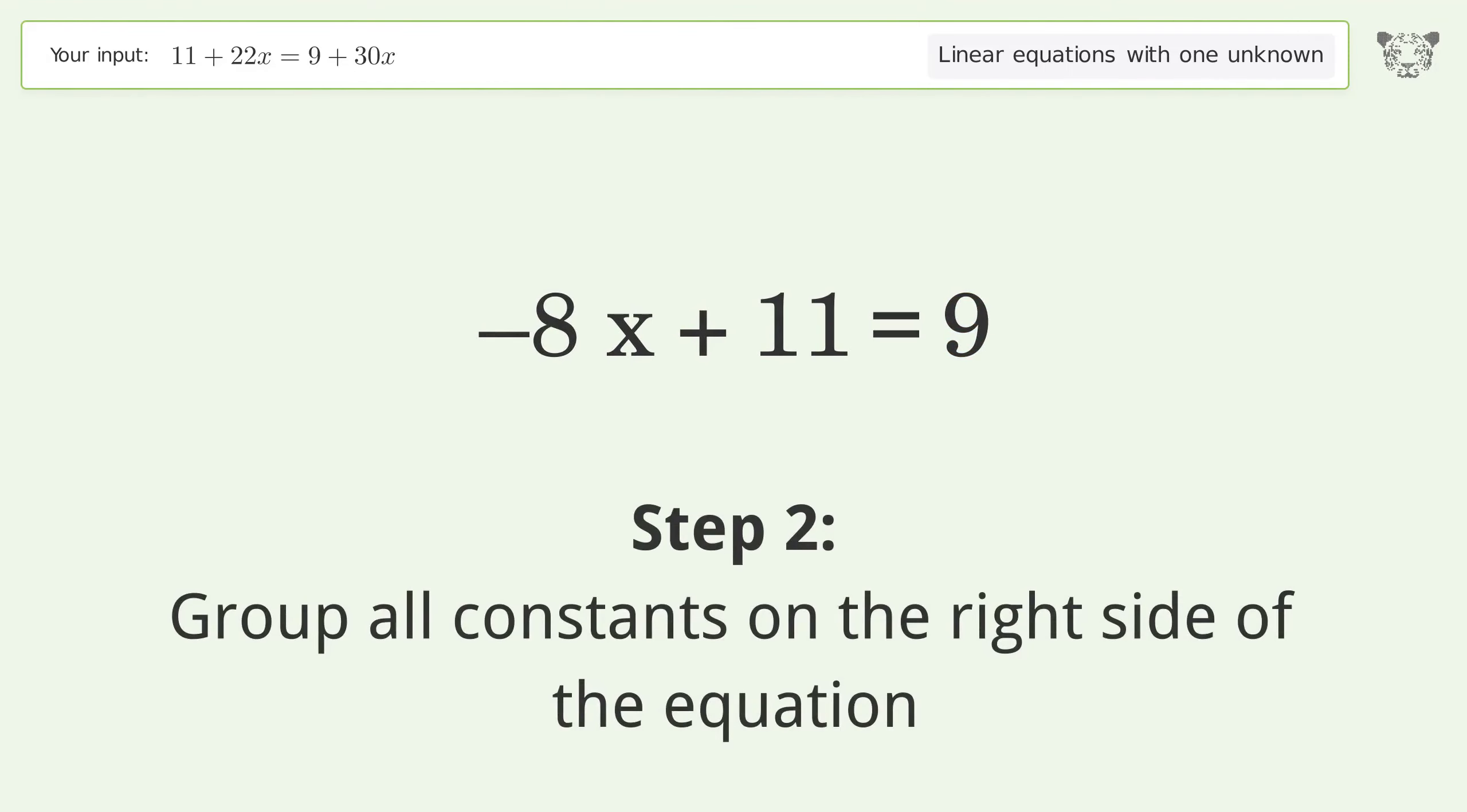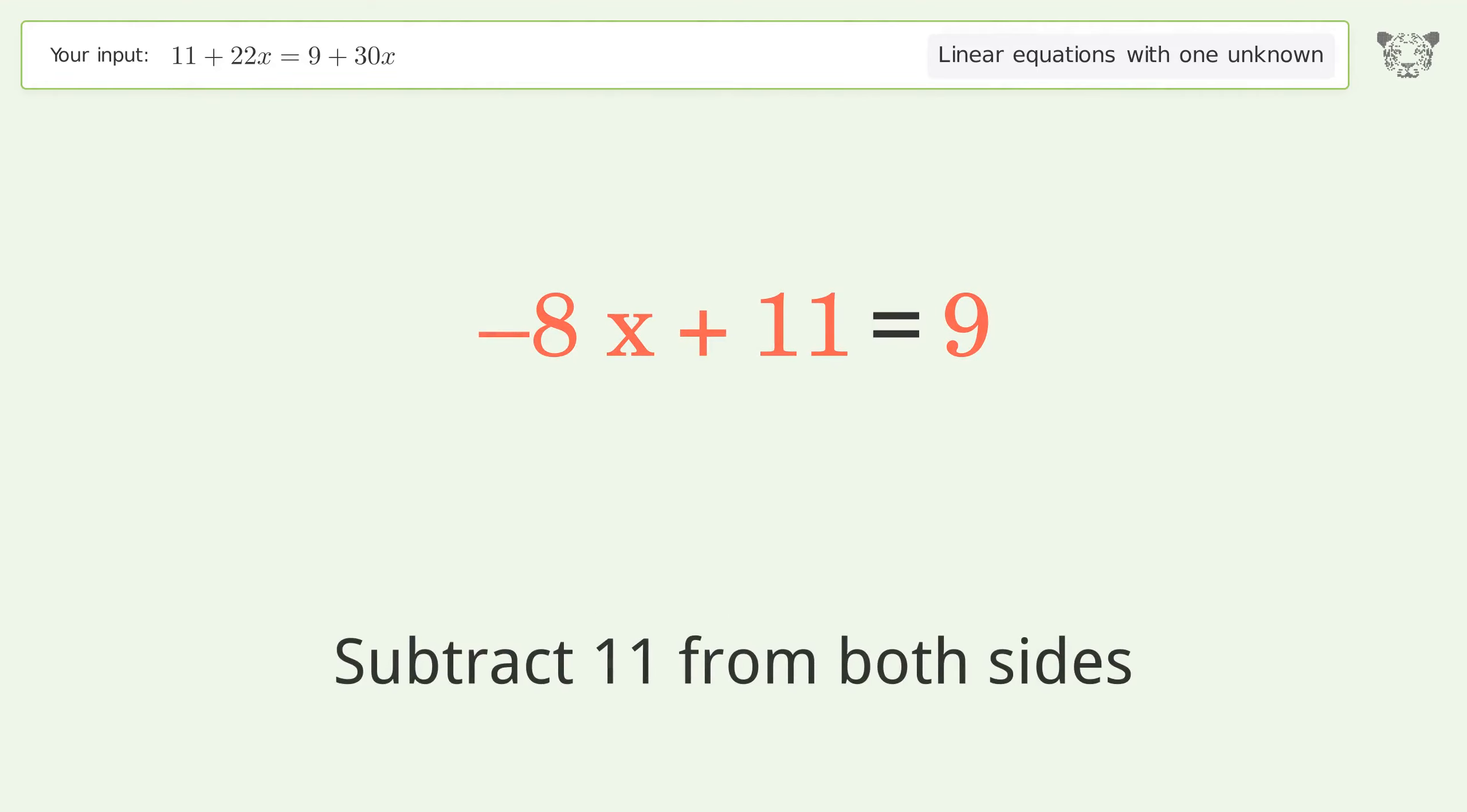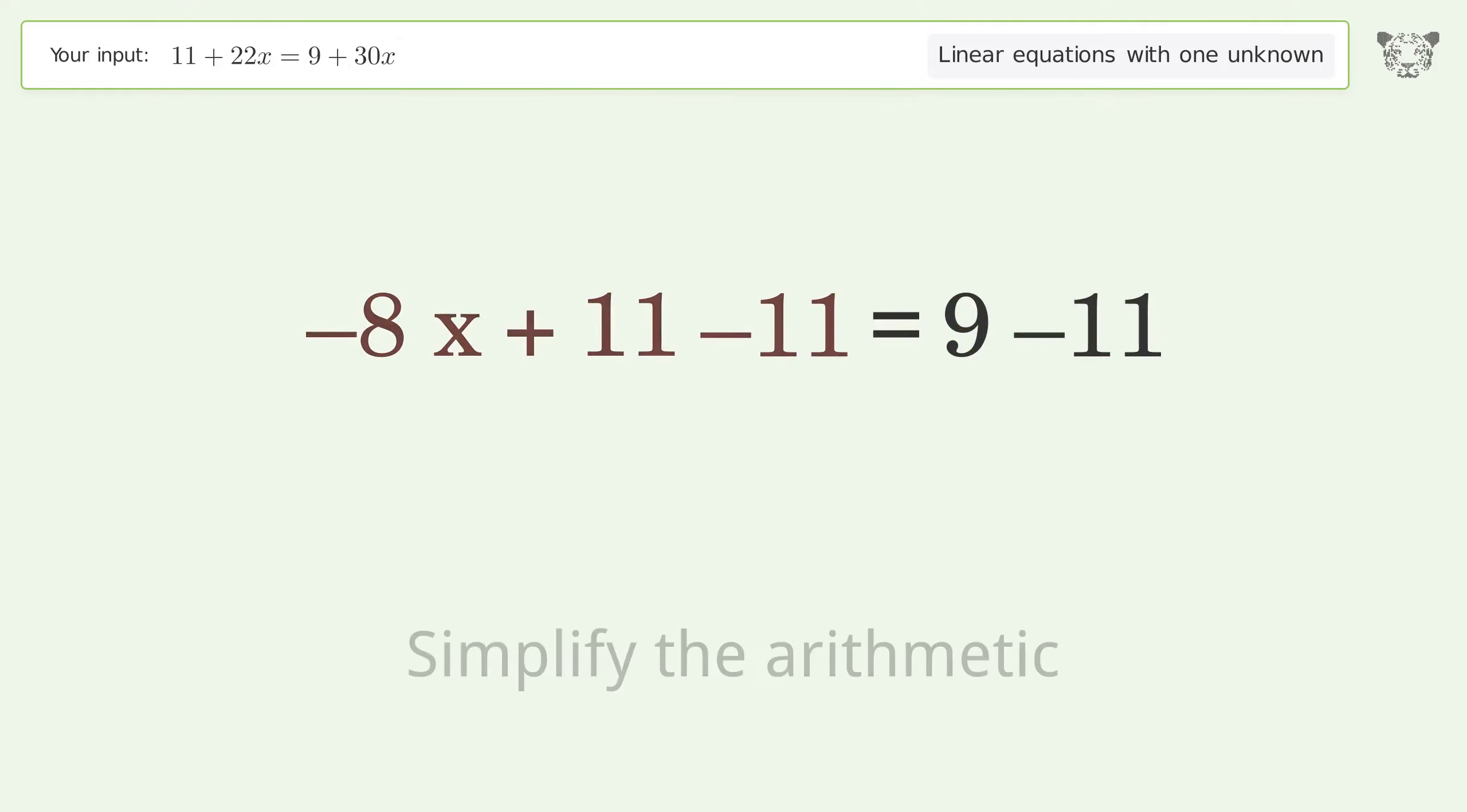Group all constants on the right side of the equation. Subtract 11 from both sides. Simplify the arithmetic.